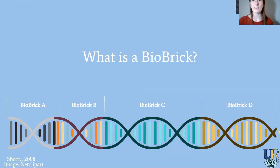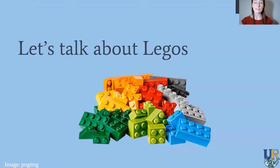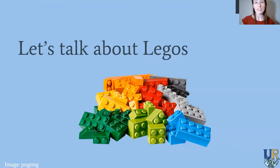To help understand this a little better, let's talk about Legos. Each Lego has the same general structure, and because of that we can combine any type of Lego to all other types of Legos. It doesn't matter the full shape, size, or color — they can all be connected to create an endless possibility of structures. We should think of biobricks as the Legos of synthetic biology, where every biobrick can be attached to all other biobricks, creating an endless possibility of DNA segments with unique functions.